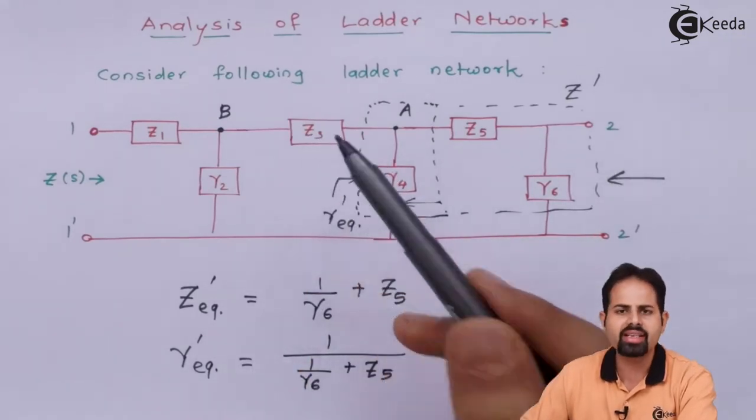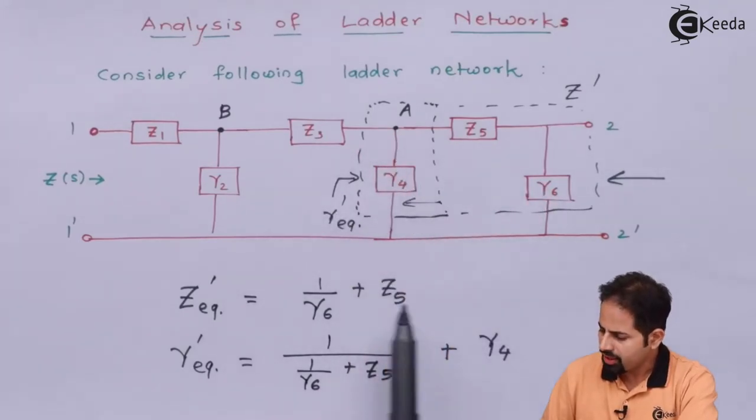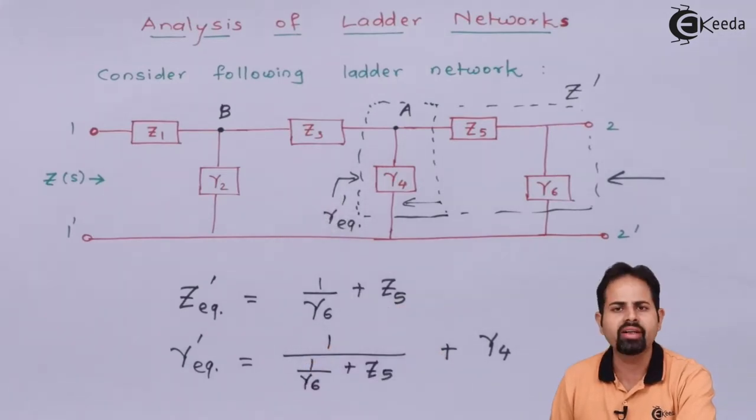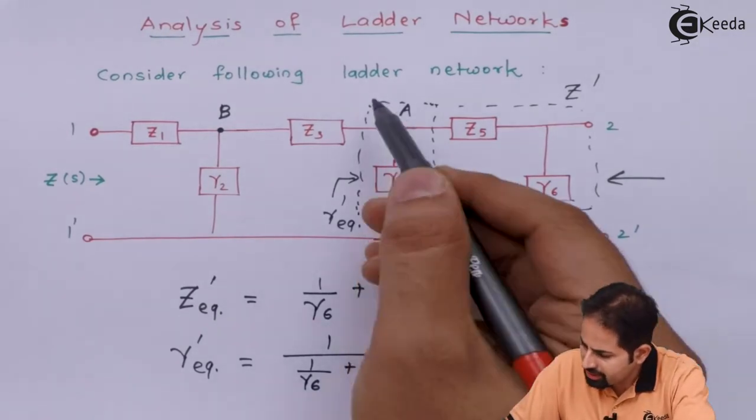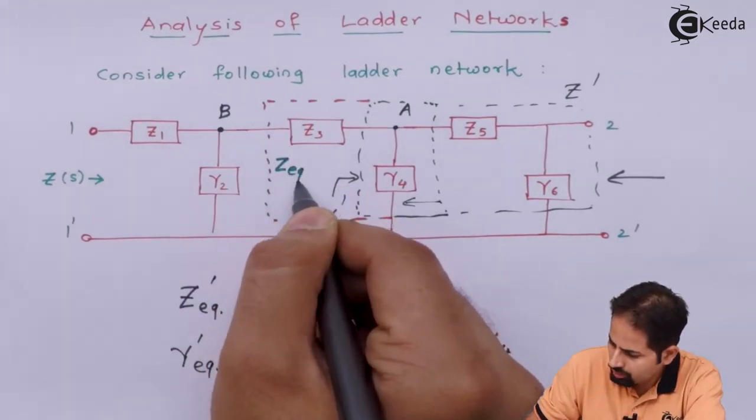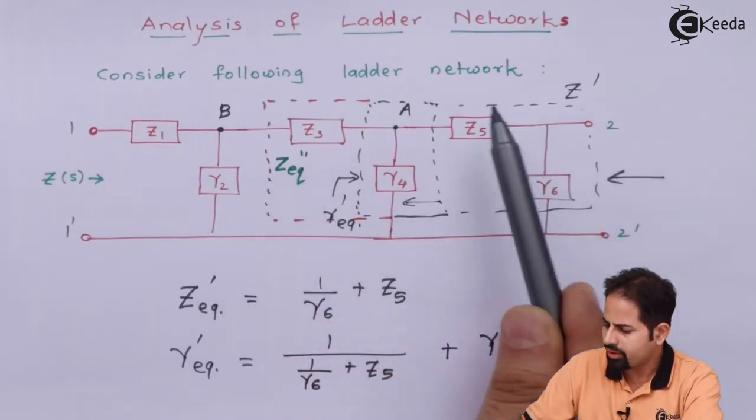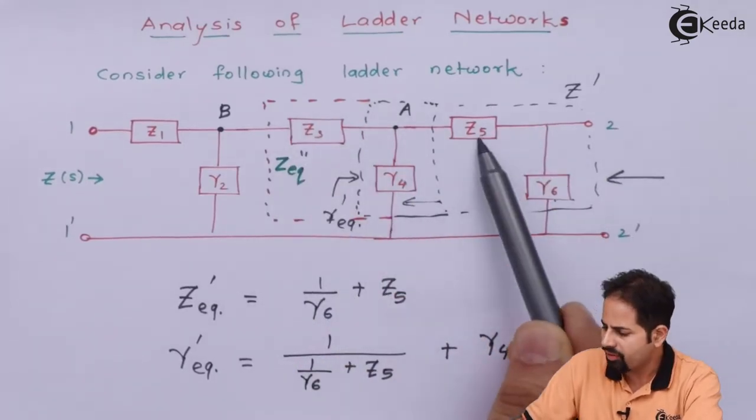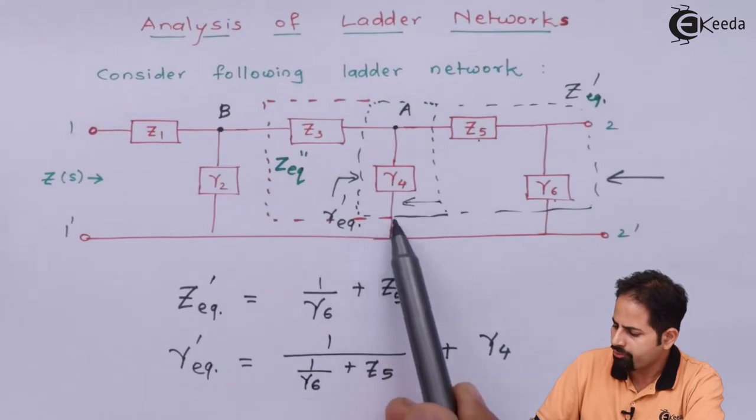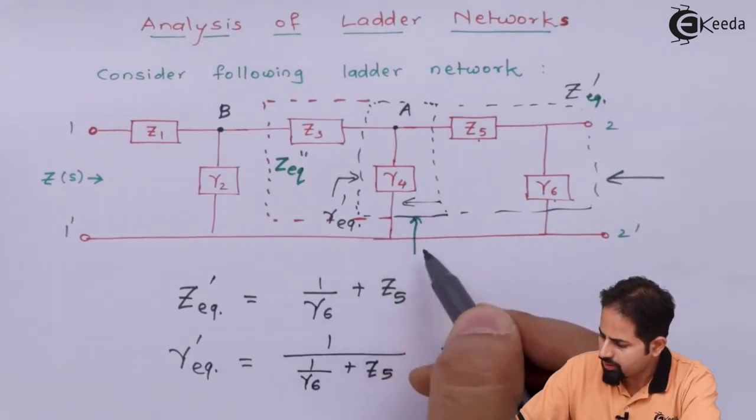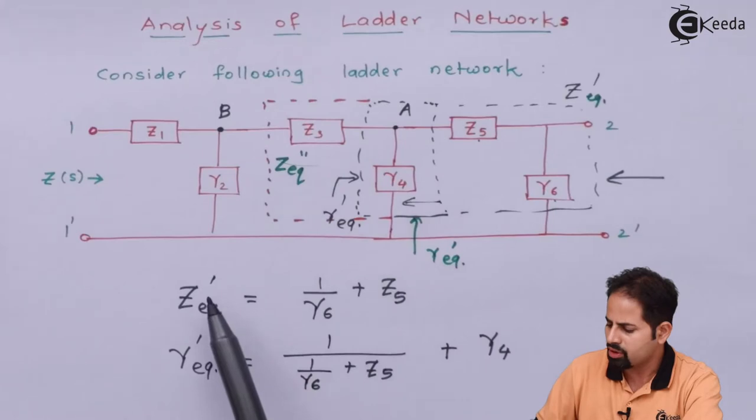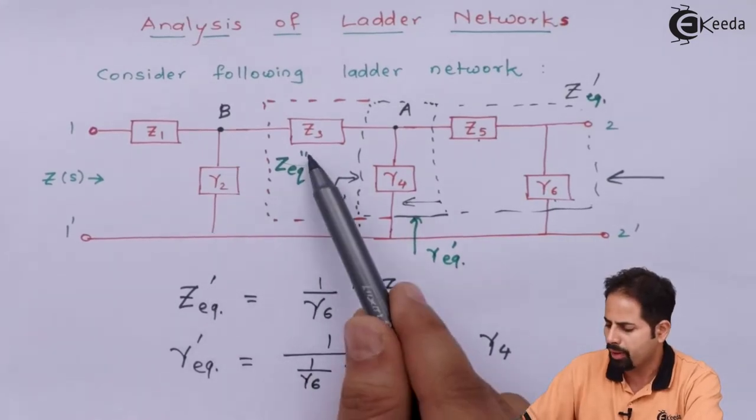Now again when I come further, I can see there is Z3. So for adding this Z3, what I will do, I will reverse this because Z3 is impedance which is in series and now I will calculate Z equivalent double dash. So now I will calculate, when I take all these things into consideration, Y6, Z5 is Z dash, let's say it is Z dash equivalent. Then when I consider Y4, it becomes Y equivalent. So better we call this as Y equivalent dash and then when I take consideration into Z3, it becomes Z equivalent, because we have used one dash or prime here, it will be double prime or double dash.